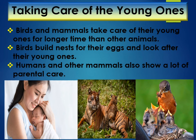Birds and mammals take care of their young ones for a longer time than any other animals. Birds build nests for the eggs and look after their young ones. The babies have no feathers, so the parent bird keeps them warm and gets food for them. Humans and other mammals also show a lot of parental care. Animals like dogs, cats, lions, etc. take care of their young ones like humans.